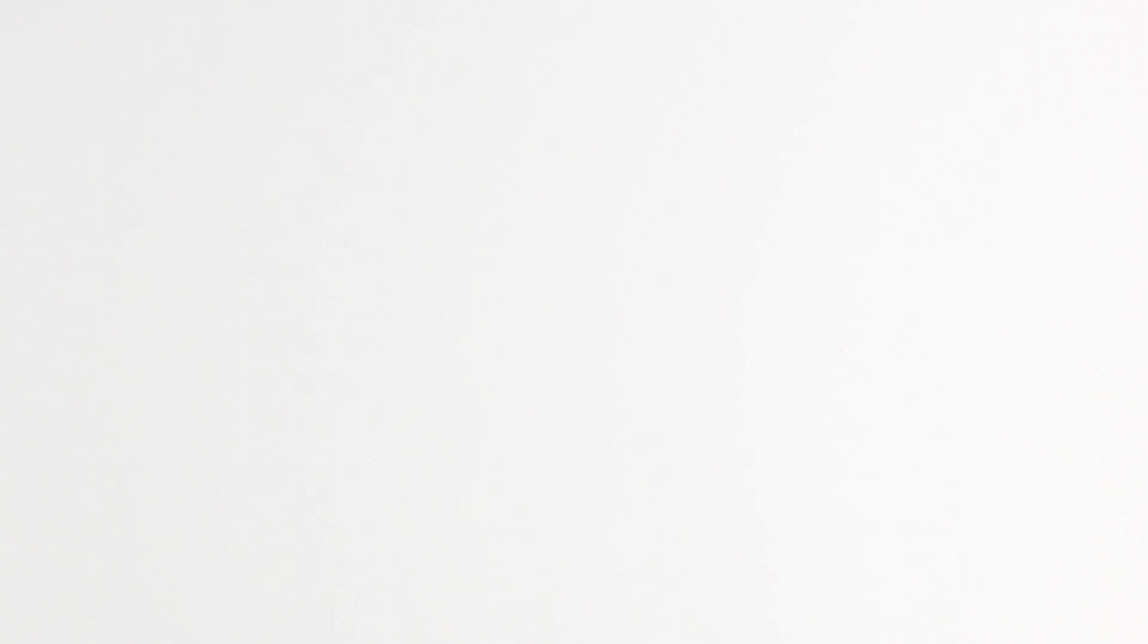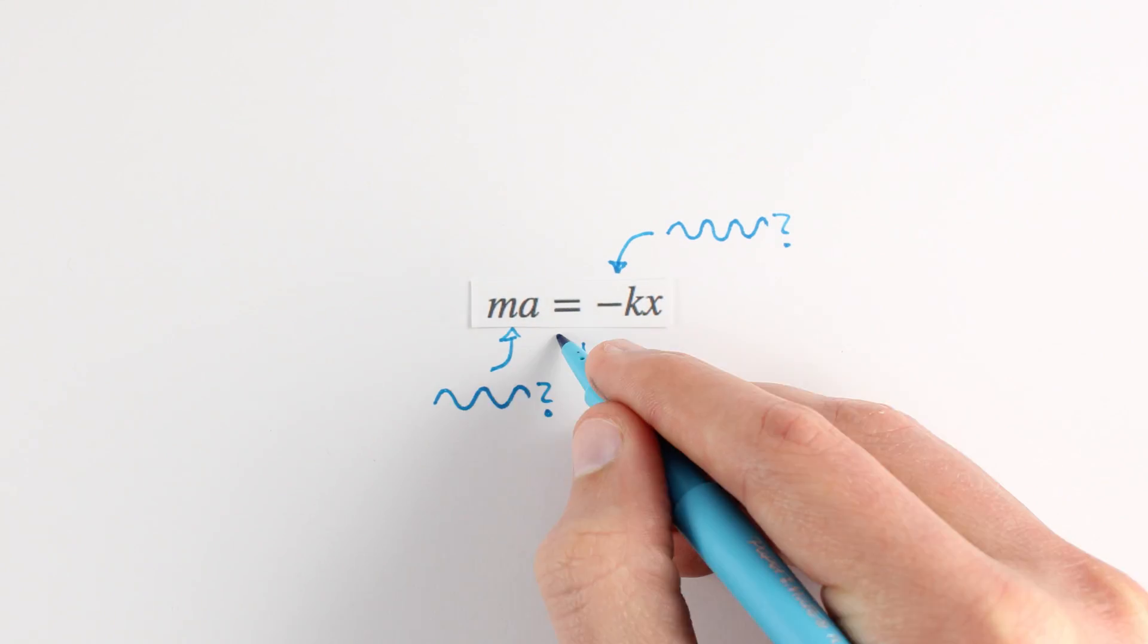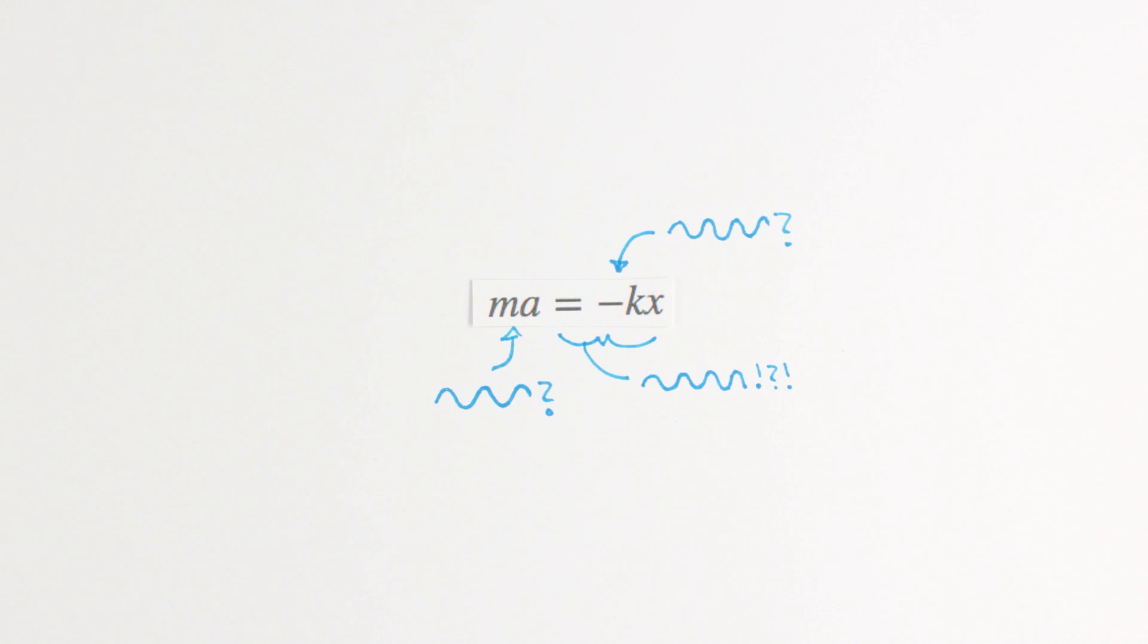So if our math is right, and our physics is right, then somewhere in this equation there should be a wave hiding. I don't see it yet, but let's see what else we can figure out about our equation.